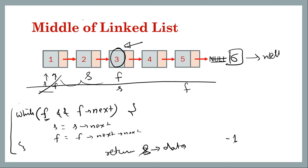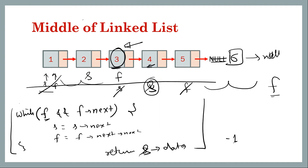Similarly for a six-node example: fast is not null and fast's next is also not null, so move fast two steps and slow one step. Now fast is null, so return slow's value — it returns four. When there are six nodes it returns four, when there are five nodes it returns three. You can tweak your solution if the requirement is to return the first of the two middle nodes in the even case.